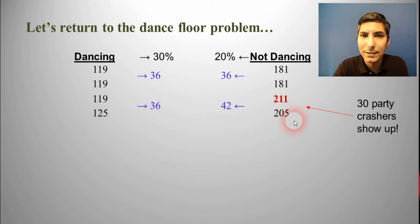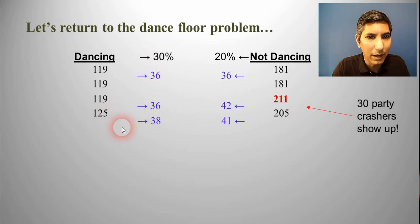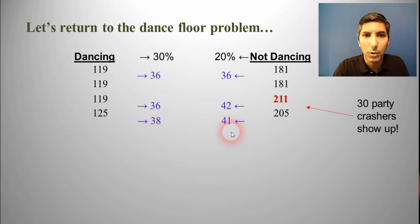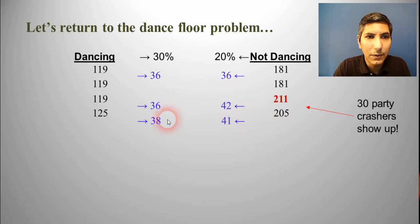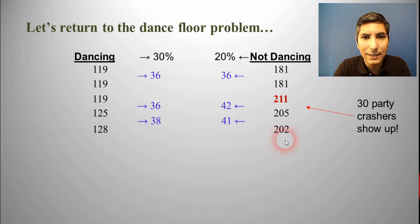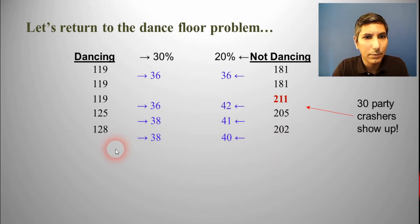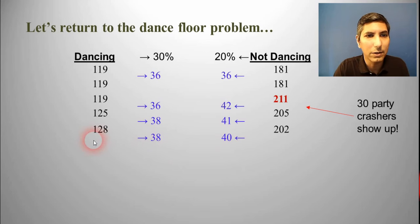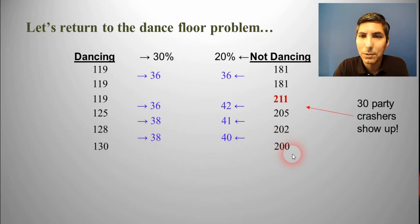The dance floor goes up by 6, and the not dancing side goes down by 6. We can do this again: 30% of 125 is 38, and 20% of 205 is 41. So after the next song, we have a net change of plus 3 in the direction of the dance floor. The dance floor goes up to 128, the not dancing side goes down to 202. And we do it again — after this song, it's a net change of plus 2 in the direction of the dance floor. So the dance floor goes up to 130, and the not dancing side goes down to 200.